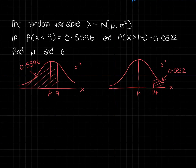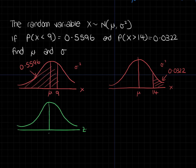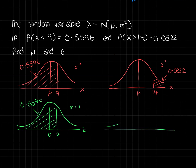We can't do anything with these until we convert them into our standard normal. For the first condition in the standard normal — mean 0, sigma 1 — we'll have a z value I'll call 'a', with area 0.5596 to the left. For the second condition in the standard normal — mean 0, sigma 1 — we'll have a z value I'll call 'b', with area 0.0322 to the right.